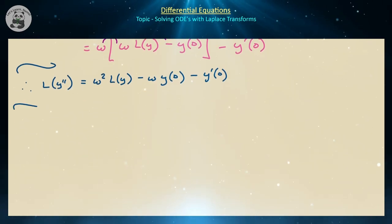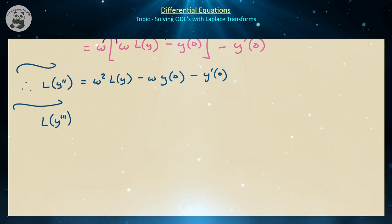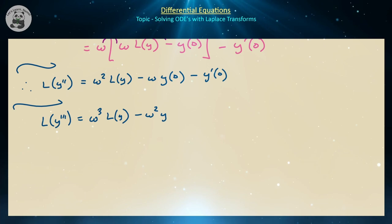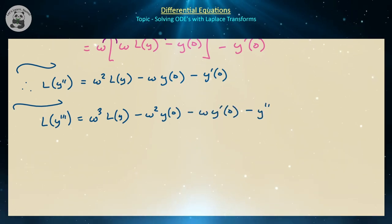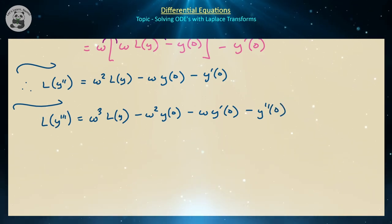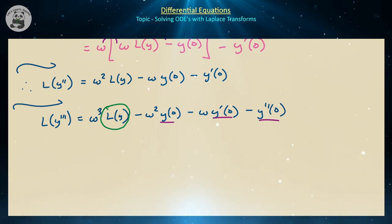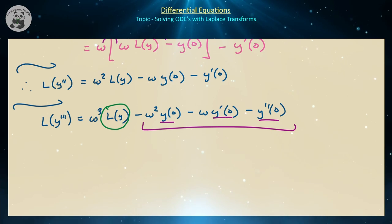We can extend this to the third derivative: the Laplace transform of y triple prime equals omega cubed times L{y} minus omega squared times y of 0 minus omega times y prime of 0 minus y double prime of 0. Notice the only unknowns are L{y} — the initial values y of 0, y prime of 0, y double prime of 0 are just numbers, making this a polynomial.